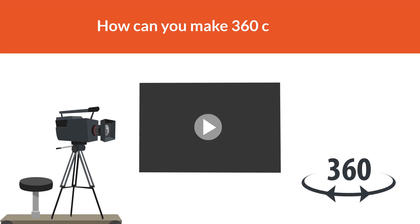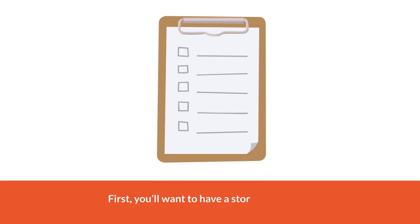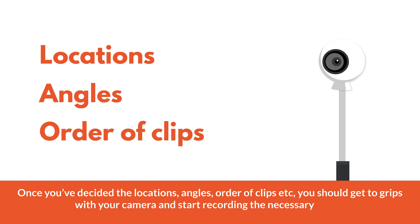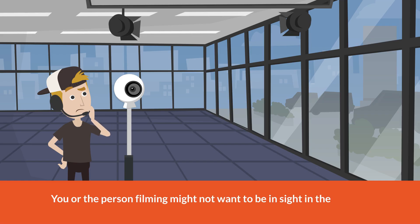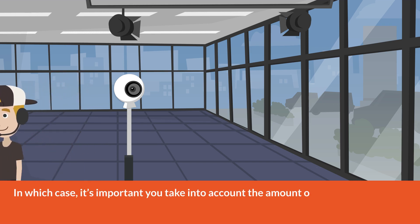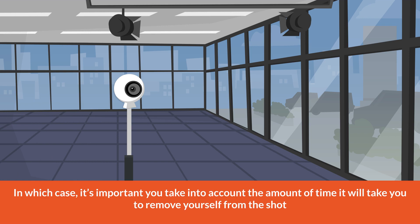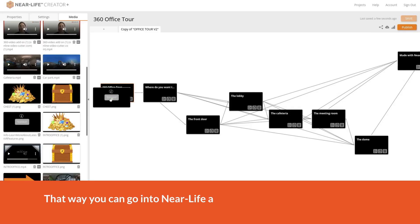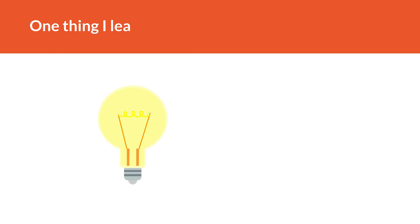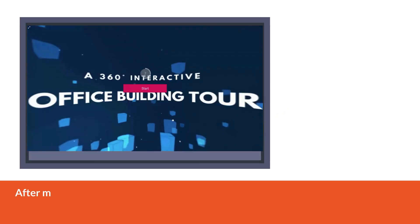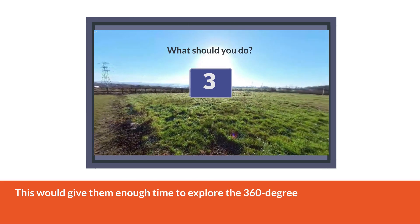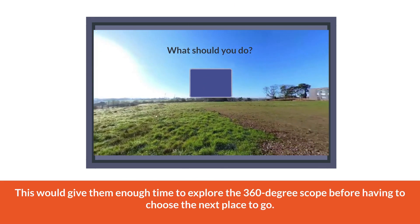How can you make 360 content? First, you'll want to have a storyboard or plan. Once you've decided the locations, angles, and order of clips, get to grips with your camera and start recording the necessary media. You or the person filming might not want to be in sight of the footage, in which case it's important to account for the time it will take to remove yourself from the shot. After recording, you'll need to trim the footage to your desired length, then go into Nearlife and place each clip in the right place. One thing I learned: don't make your clips too short. After making my 360 degree video, I realised the user should have more time in each area, giving them enough time to explore the full 360 degree scope before having to choose the next place to go.